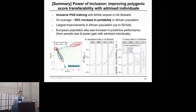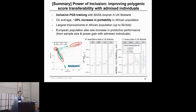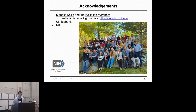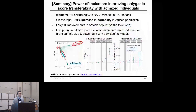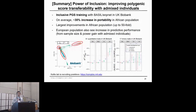To summarize: I presented an inclusive polygenic score training strategy using a polygenic score method that can take individual-level data as input. On average, we saw a 30% improvement in portability across African populations. Because of the availability of admixed individuals, this approach is going to be helpful in improving the transferability of polygenic scores across populations. Thank you, and I'm happy to take any questions.